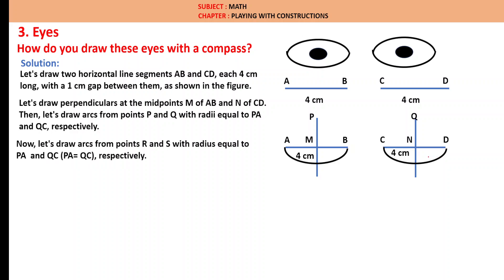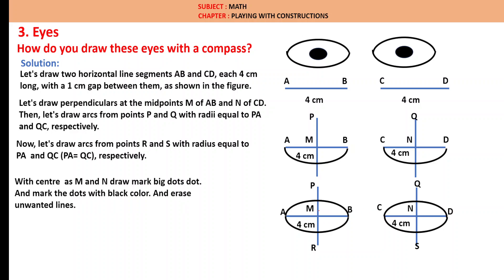Let us draw an arc from R and S with a radius equal to PA and QC respectively. We are drawing with R and S as centers, the top side curves. Now this curve is completed. If the center is M, we are drawing this first marking as a big point. Then we are marking this with the dots. And we are erasing unwanted lines. Required figure is obtained.